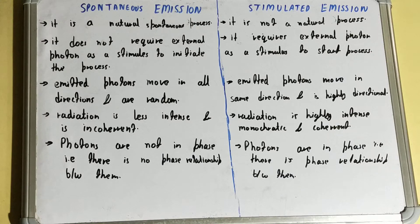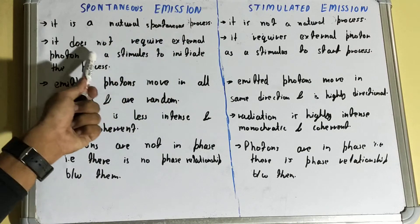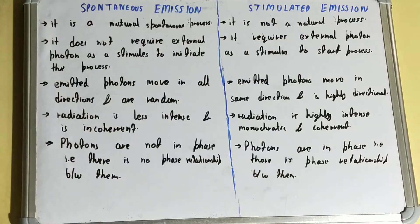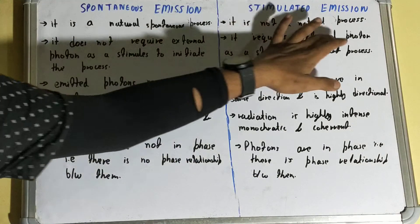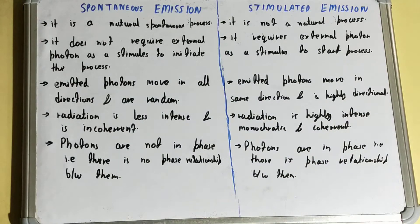Spontaneous emission does not require an external photon as a stimulus to initialize the process — nothing artificial or external is needed. But stimulated emission requires an external photon as a stimulus to start the process, so an external stimulus is always required in the case of stimulated emission.